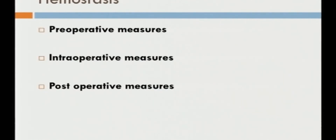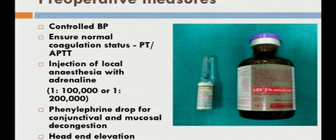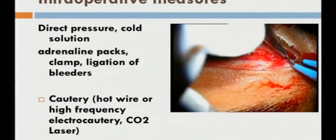Hemostasis is a very important part of the success of oculofacial plastic surgery. One should take pre-operative, intra-operative, and post-operative measures to control bleeding. As pre-operative measures, blood pressure should be controlled and normal coagulation and bleeding profile ensured. Whenever medical conditions allow, one should use a higher concentration of adrenaline, along with usual measures like head elevation. During the intra-operative period, direct pressure, cold solution, and adrenaline packs can be used. We are also using bipolar cautery, unipolar cautery, or CO2 laser.